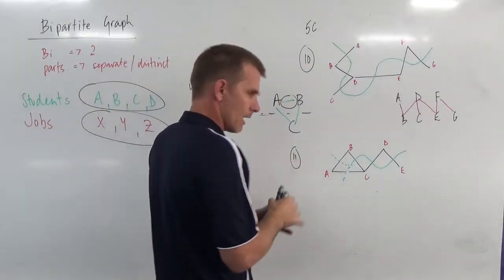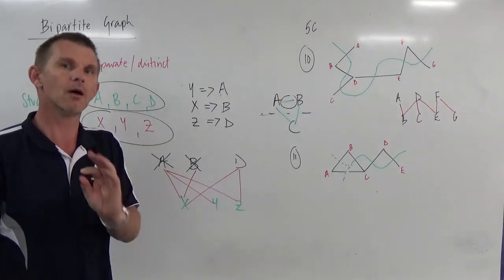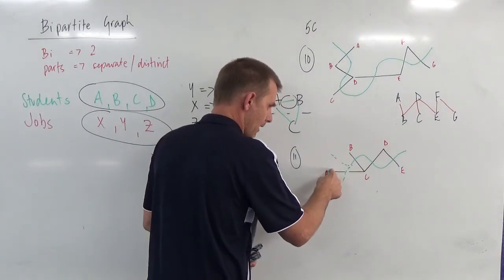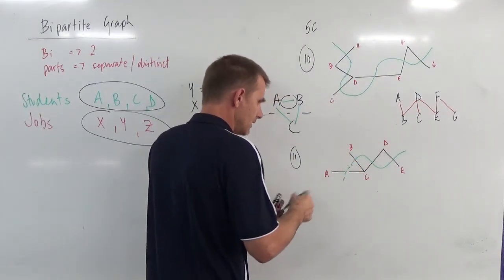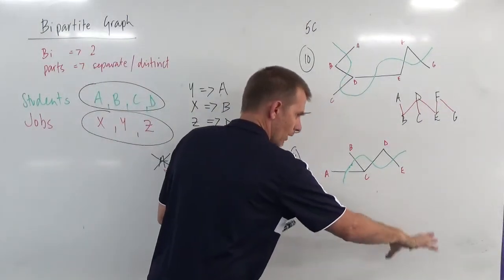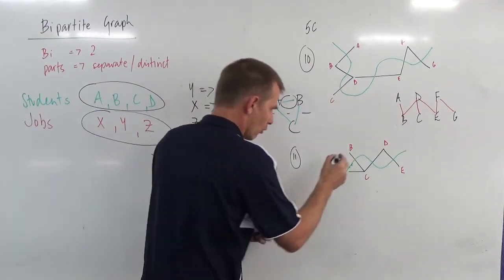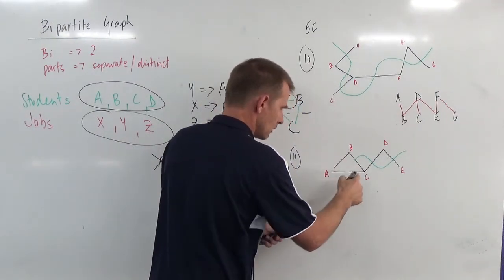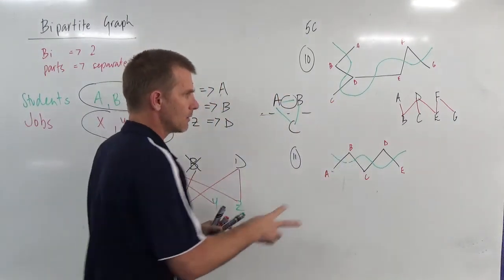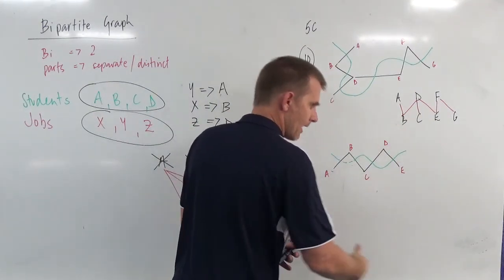This question could ask you to remove one link to make it a bipartite graph. If I remove that link, this would be okay — C and E are on one side, D, B and A are on the other side. Or you could do the opposite: remove the other link, and then B and D are on one side, A, C and E are on the other side.